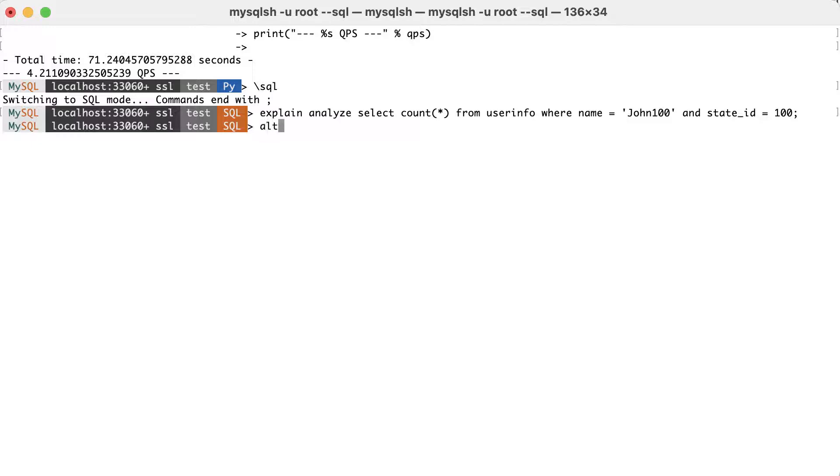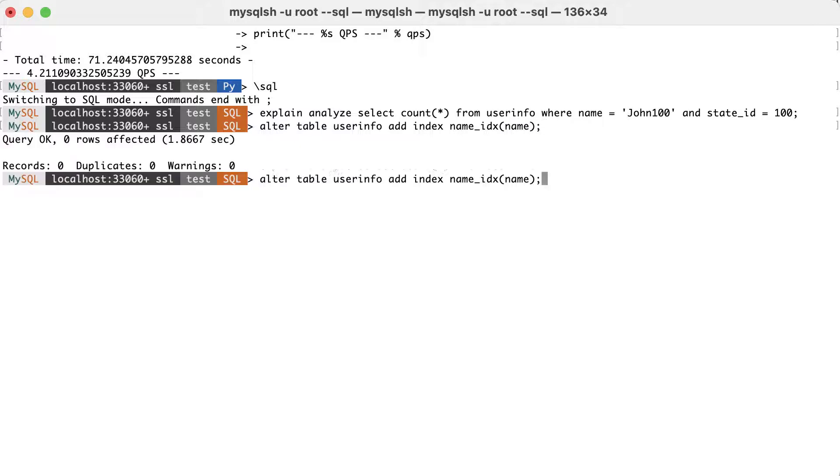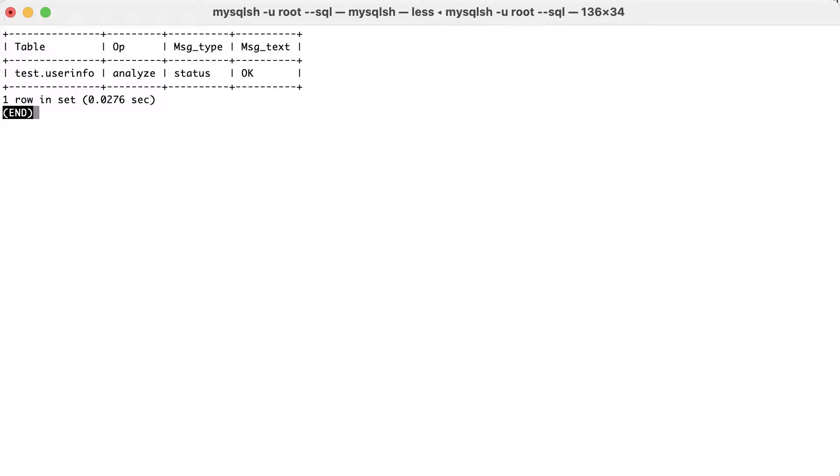The second test is for individual indexes. First, we'll add one individual index on name column, and one individual index on state id column. Then, we'll run analyze table just to make sure that statistics are on point.